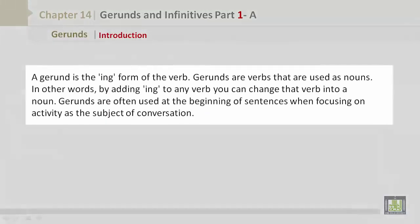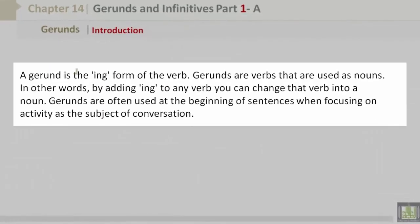Introduction. A gerund is the -ing form of a verb. Gerunds are verbs that are used as nouns. In other words, by adding -ing to any verb you can change the verb into a noun. Gerunds are often used at the beginning of sentences when focusing on an activity as the subject of conversation.